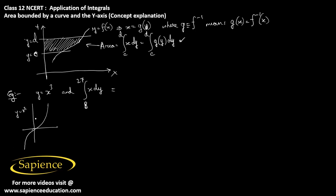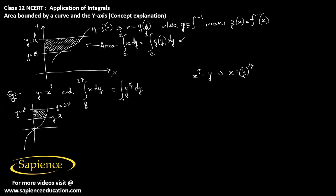This is the straight line y equals 8 and this is the straight line y equals 27. We need to find the area of this region. We need to express x in terms of y — here y has been expressed in terms of x, so we find the inverse function. From x cubed equals y, we get x equals y raised to 1 by 3. So the integral becomes the integral of y raised to 1 by 3 dy from 8 to 27.